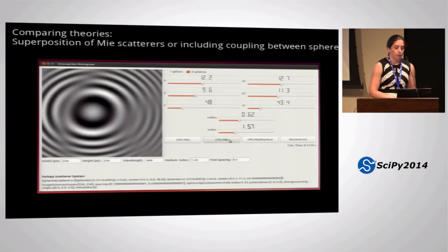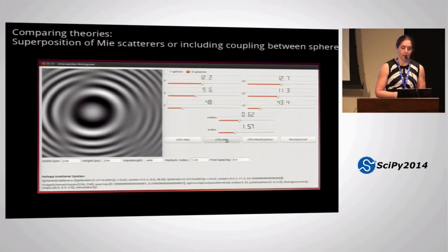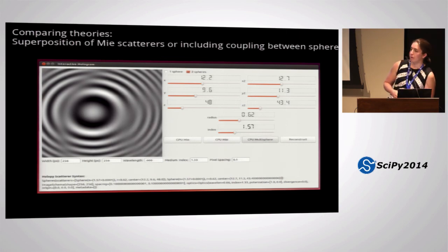And lastly, we have two different theories for two-particle holograms or multi-particle holograms. One of them is just the superposition of the two separate spheres, and the other one includes the coupling between the two spheres, which is a very slow calculation that I haven't parallelized yet. It took eight seconds to calculate that, but now that it's calculated, I have it cached so you can switch back and forth. And in the lower right corner, you can see that the gray lines are a little bit different between these two theories, so you can get an intuition for in what ways the theories vary.